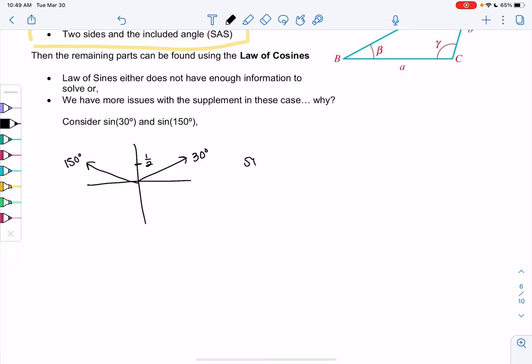But if we were to type sine inverse of one half on the calculator, the calculator tells us 30 degrees because that's the value that's in the range of sine inverse of x.